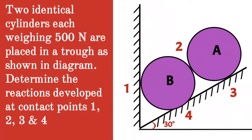Given question: two identical cylinders each weighing 500 N are placed in a trough as shown in the diagram. Determine the reactions developed at contact points 1, 2, 3 and 4.